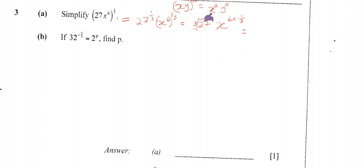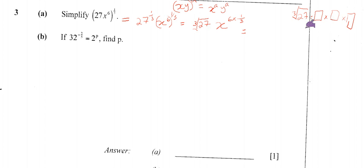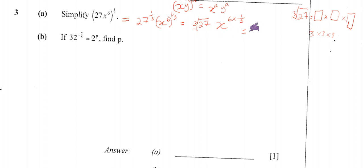When we are looking for the cube root of 27, we are looking for a number that we multiply by itself 3 times giving us 27. That number is 3, because 3 multiplied by 3 multiplied by 3 gives us 27. So the cube root of 27 is 3.